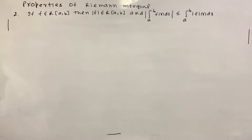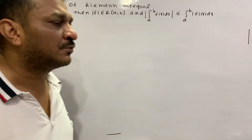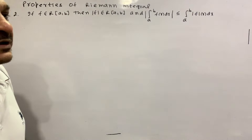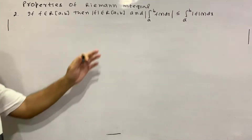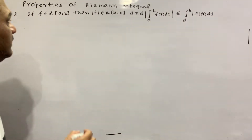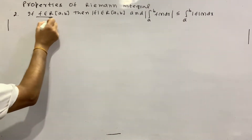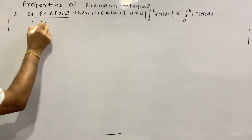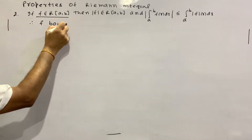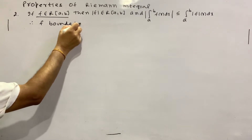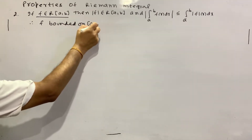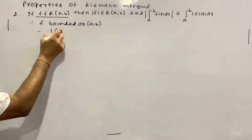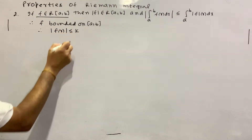So first we will prove that |F| is Riemann integrable on closed interval [A, B]. Since F is Riemann integrable on closed interval [A, B], we have that |F(x)| is less than or equal to K — that is, |F| is bounded.